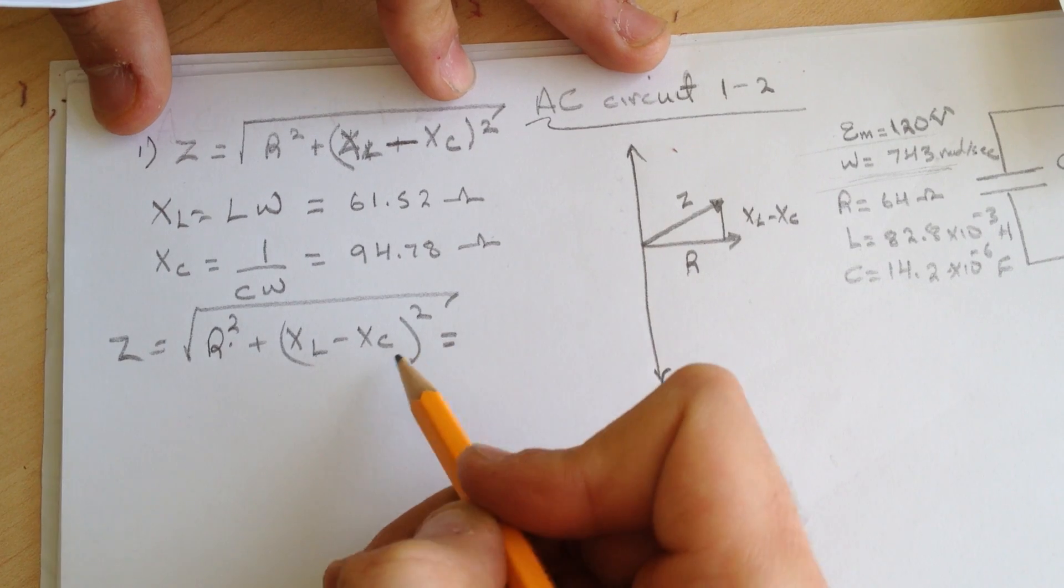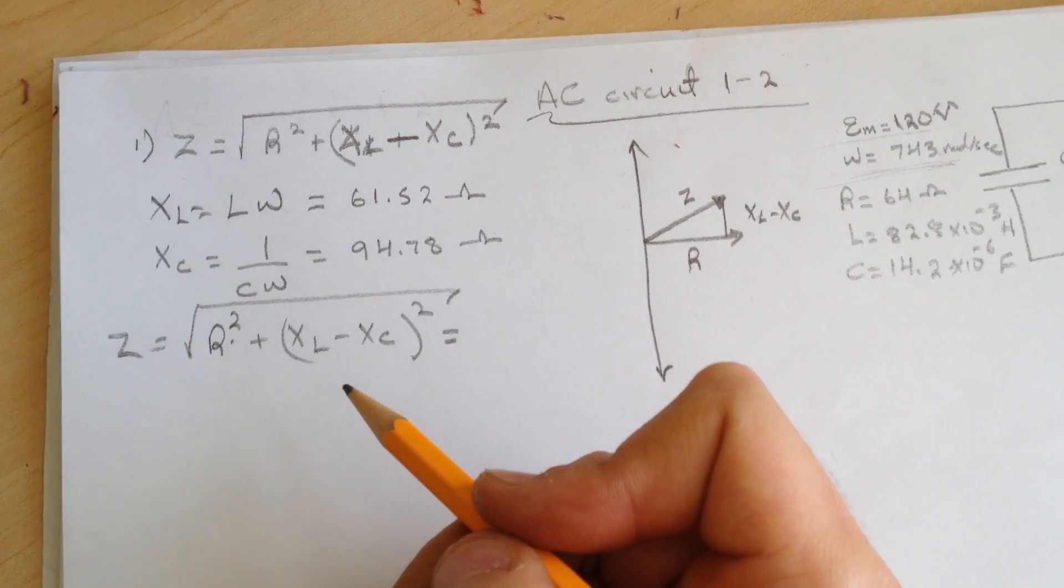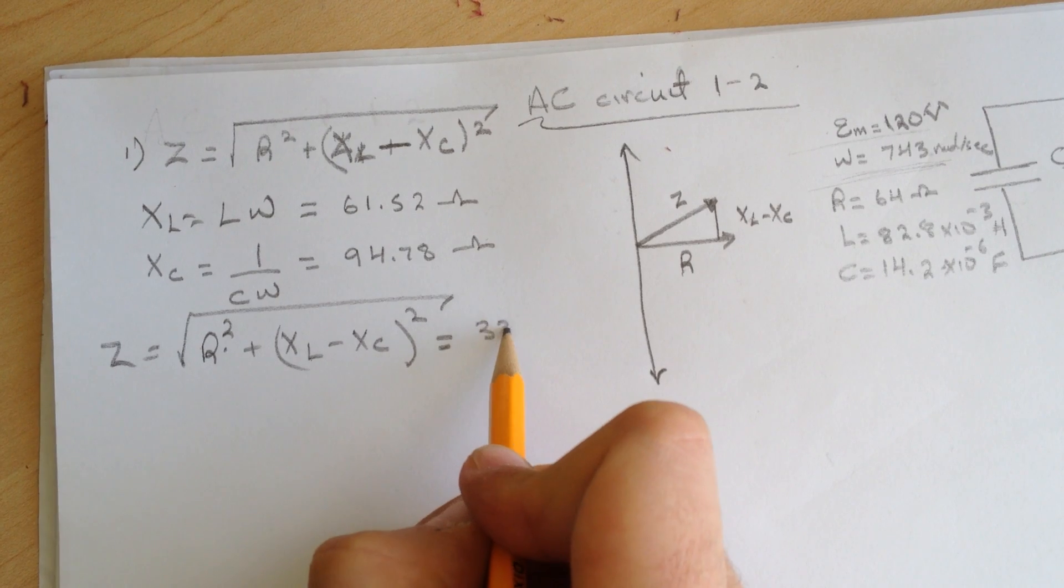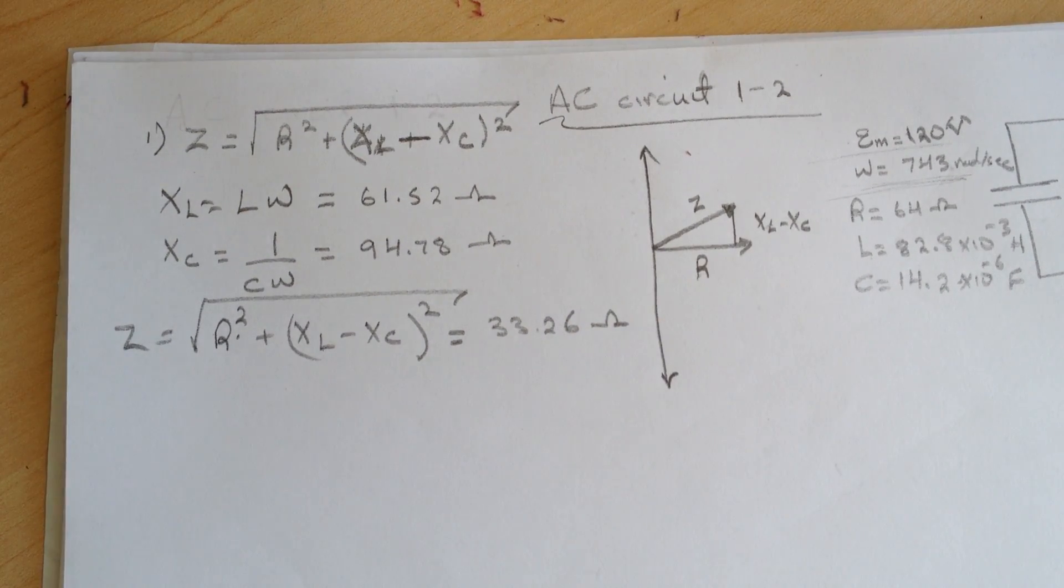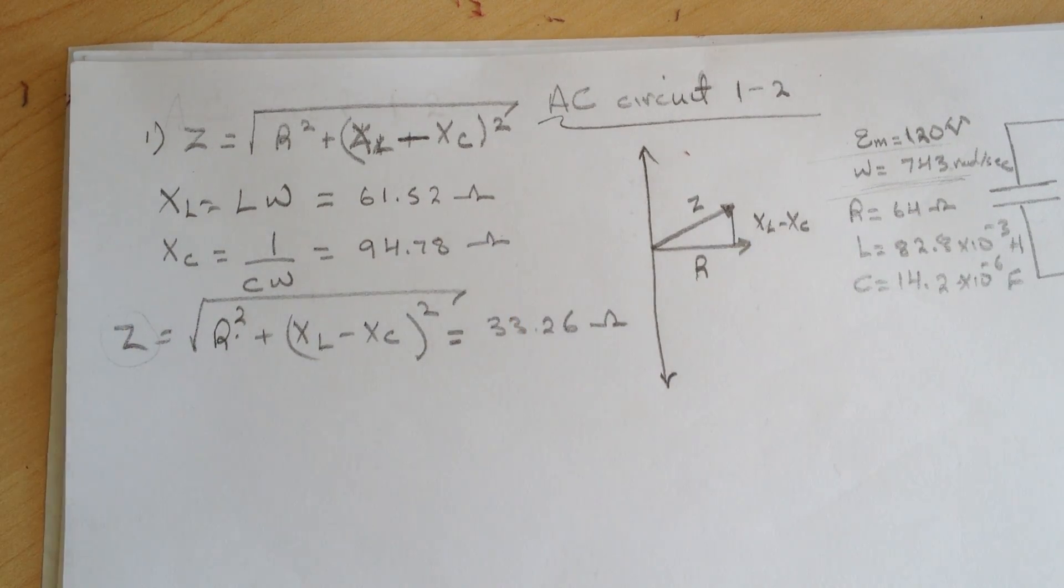So R squared plus XL minus XC squared and take the square root of that for Z. And for this guy I got 33.26 ohms for the Z. So this is the impedance of the circuit.